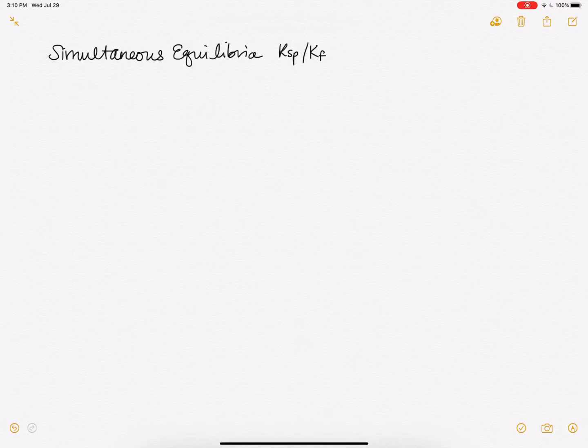Hello students! As promised, I wanted to make a video showing you how to deal with simultaneous equilibria, in this case when we're using Ksp and Kf. So a solubility product constant for a relatively insoluble salt and then a formation constant for a complex ion.